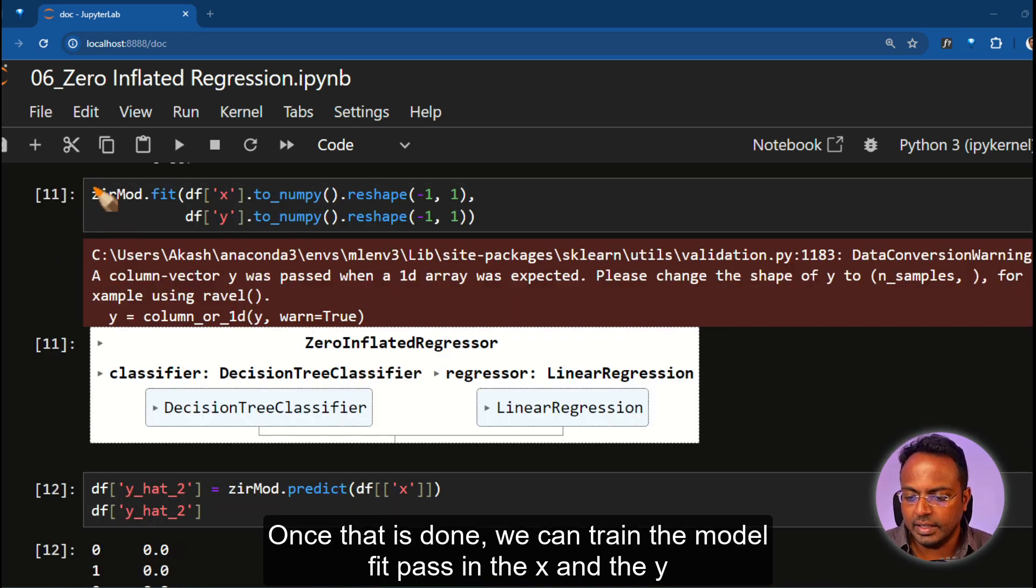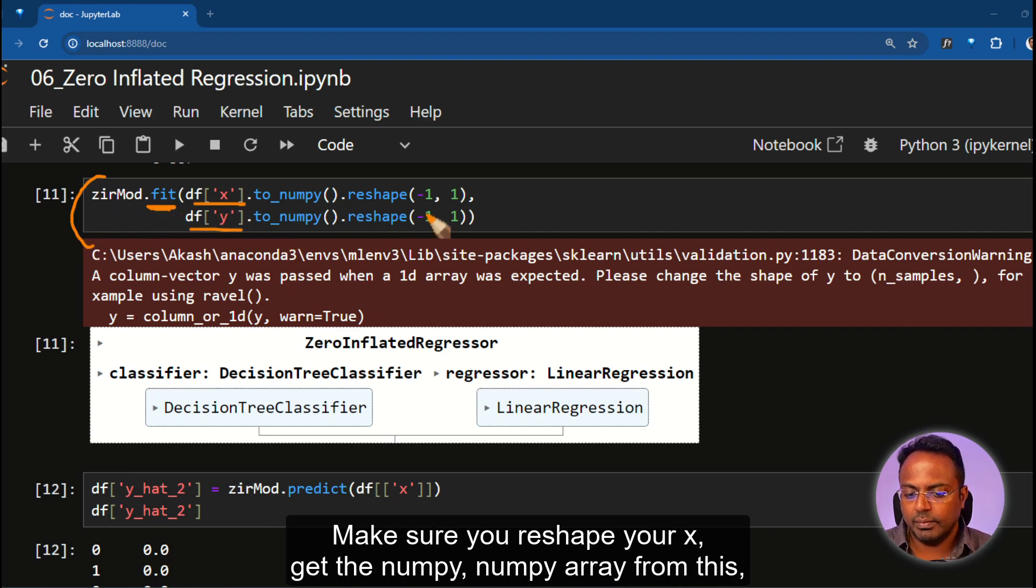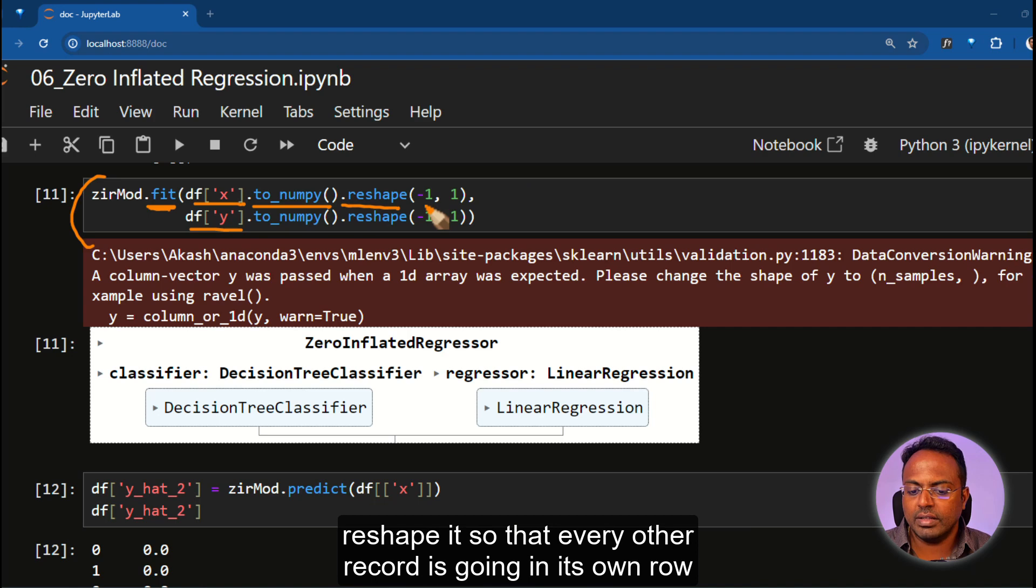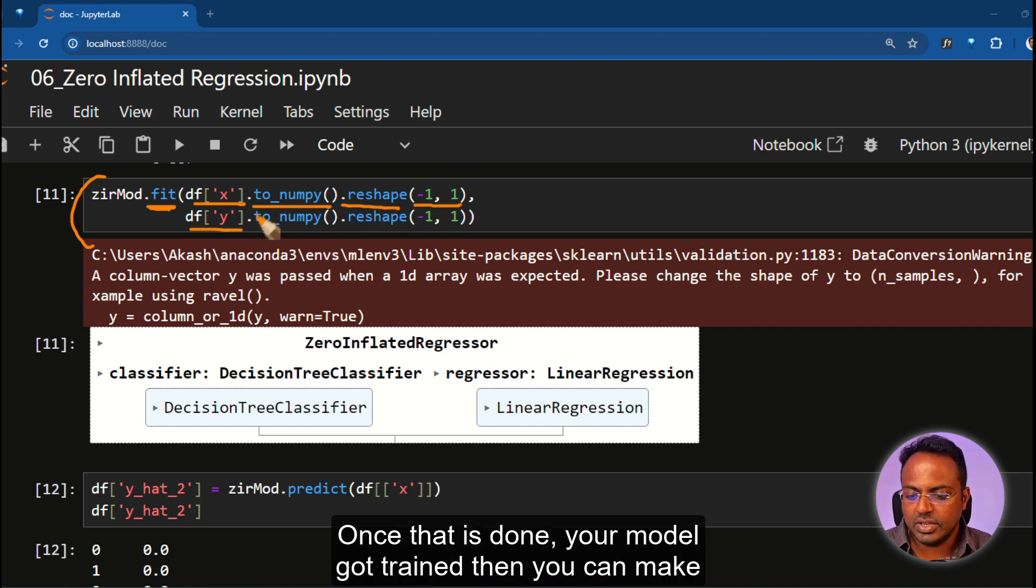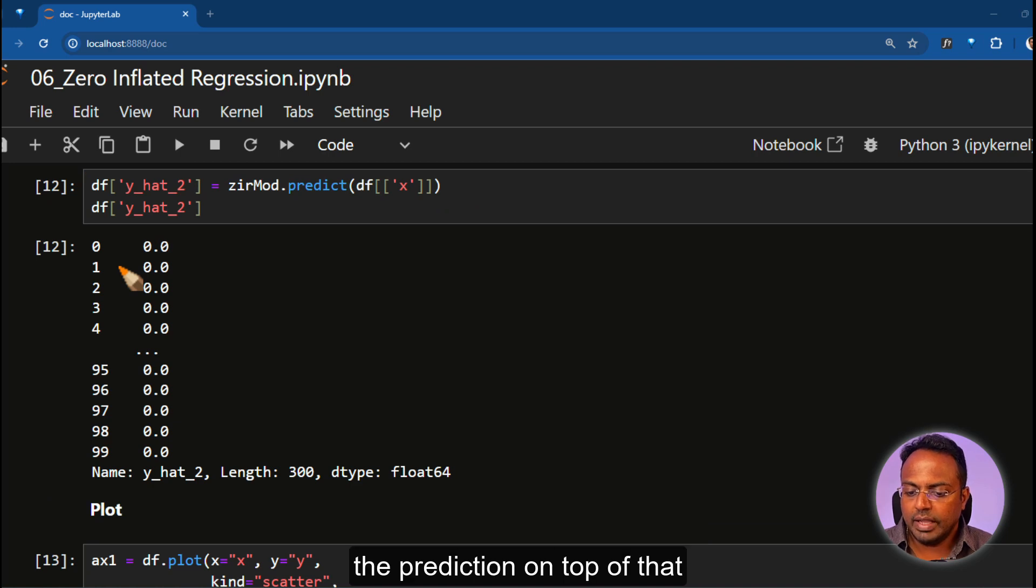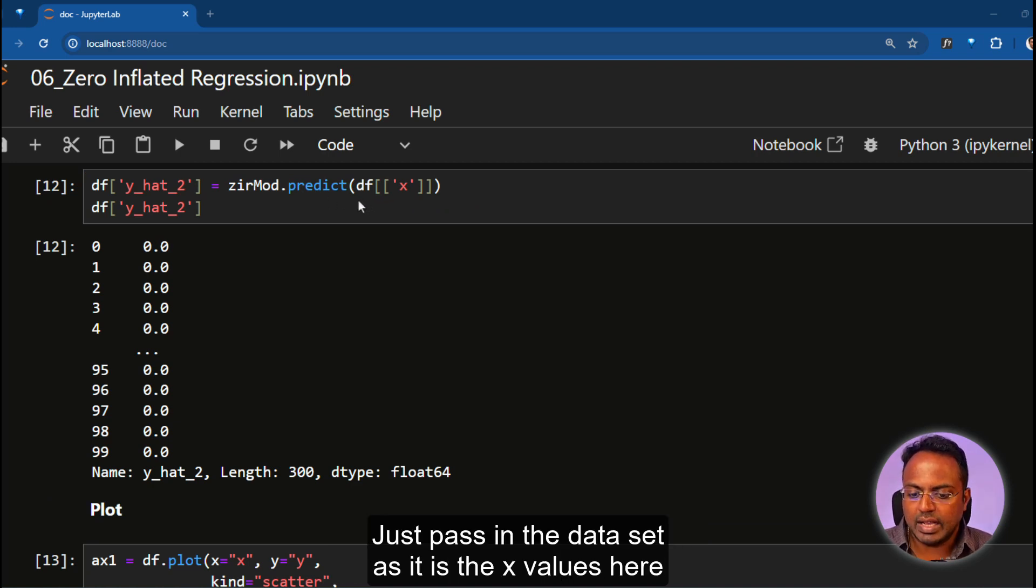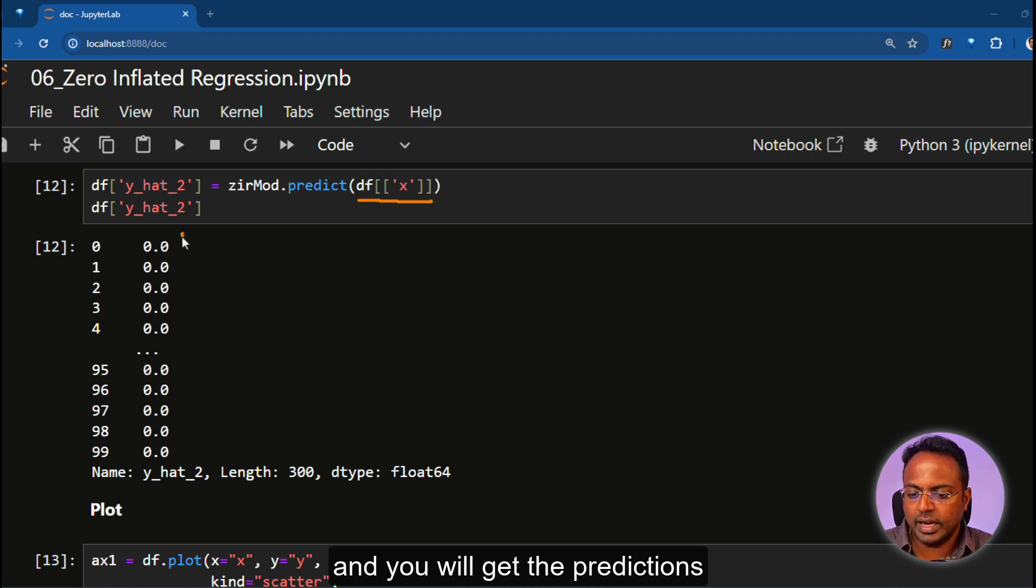Once that is done, we can train the model. Dot fit, pass in the X and the Y, make sure you reshape your X, get the NumPy array from this, reshape it so that every record is going in its own row. Once that is done, your model got trained, then you can make the prediction on top of that. Just pass in the dataset as it is, the X values here, and you will get the predictions.